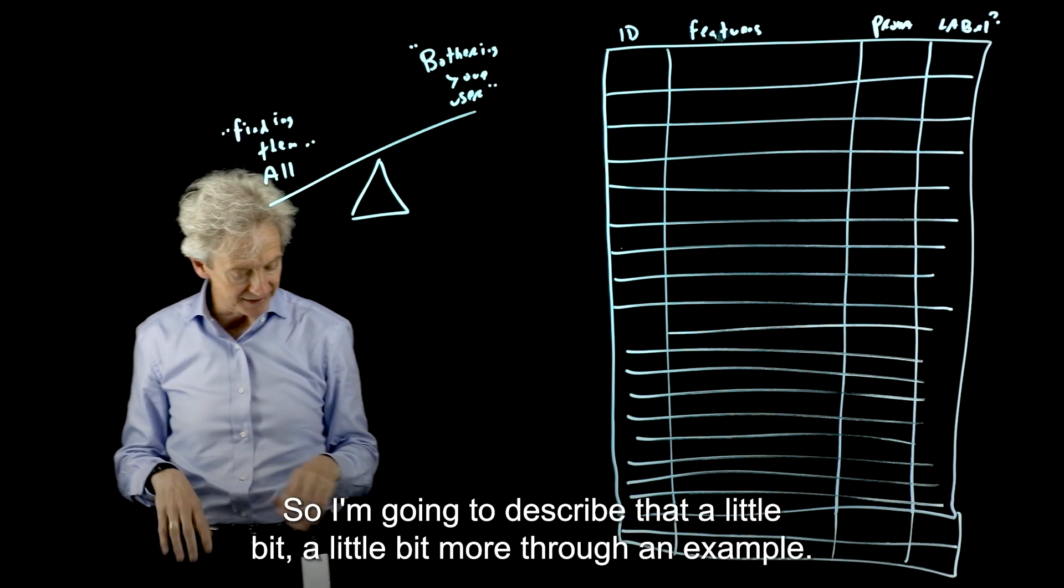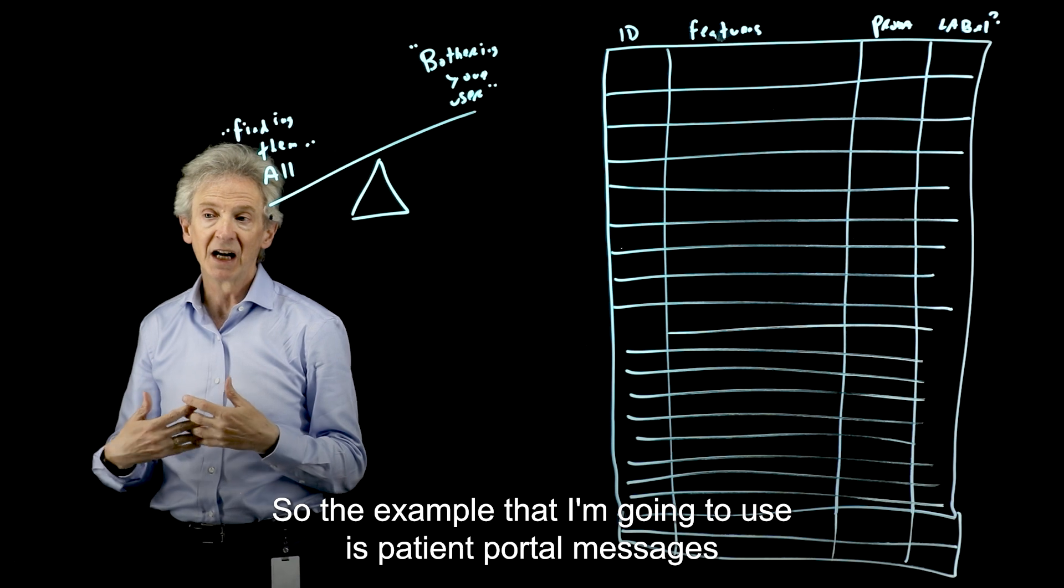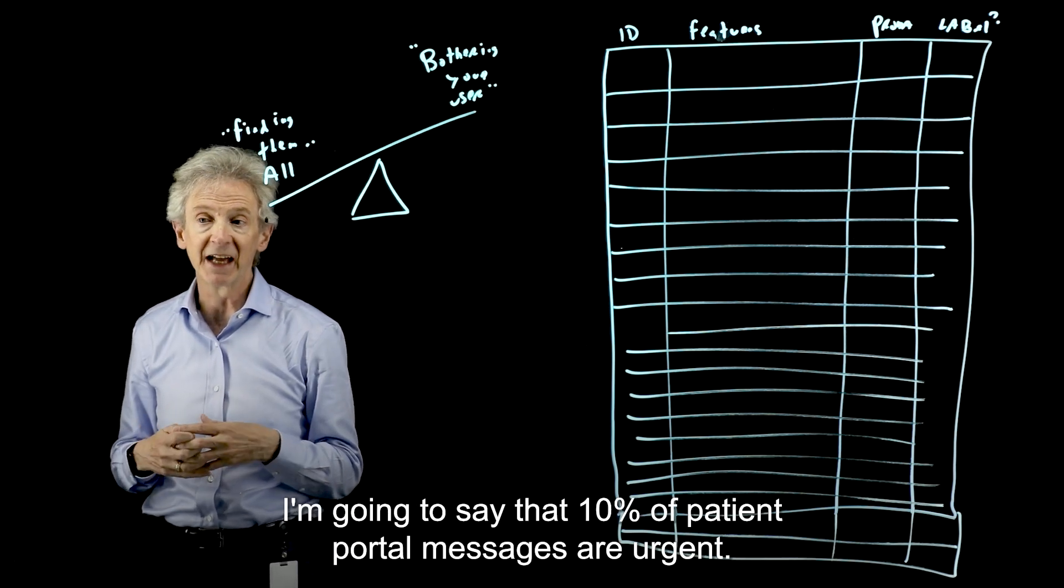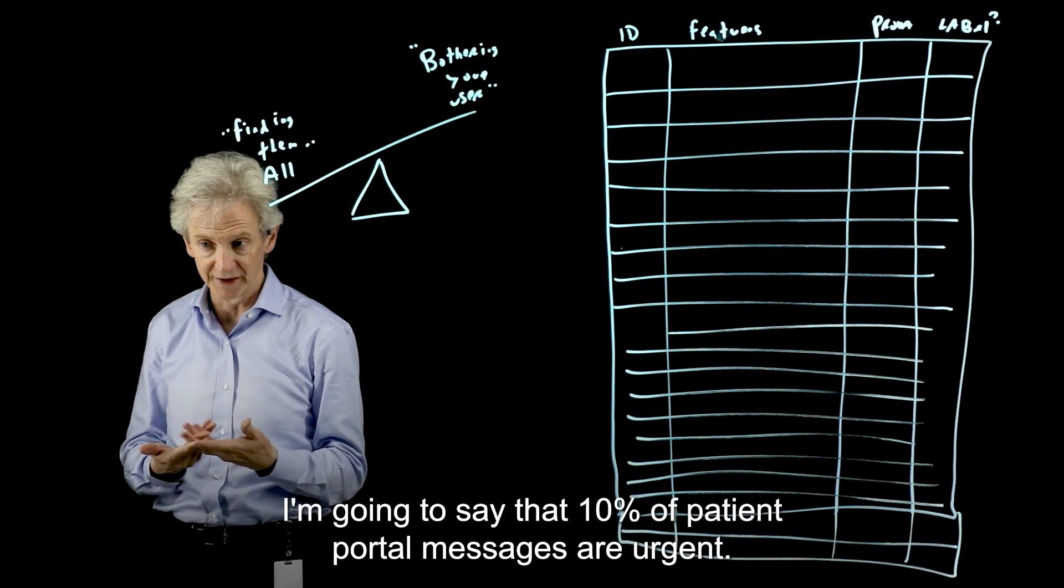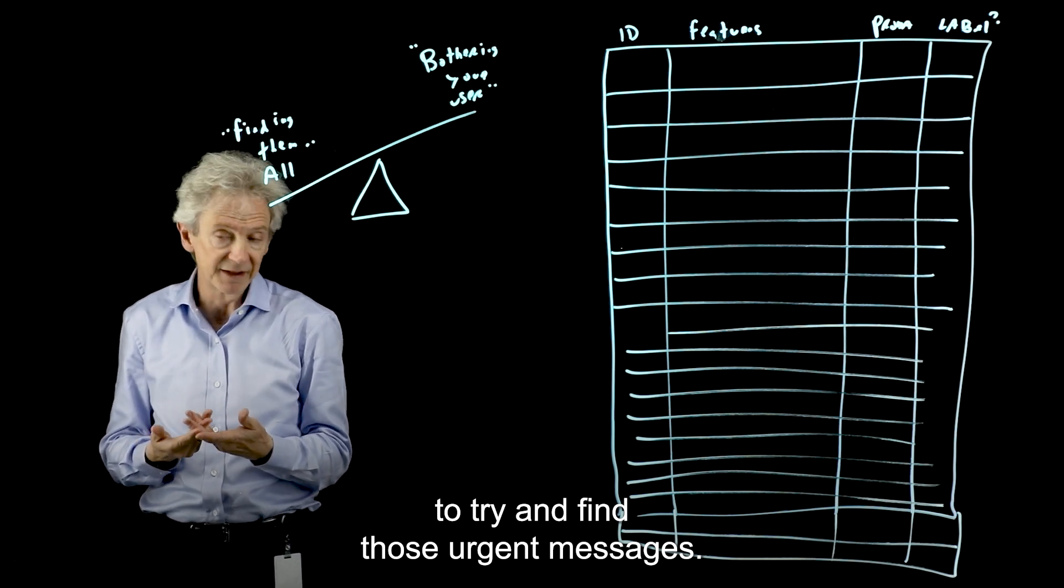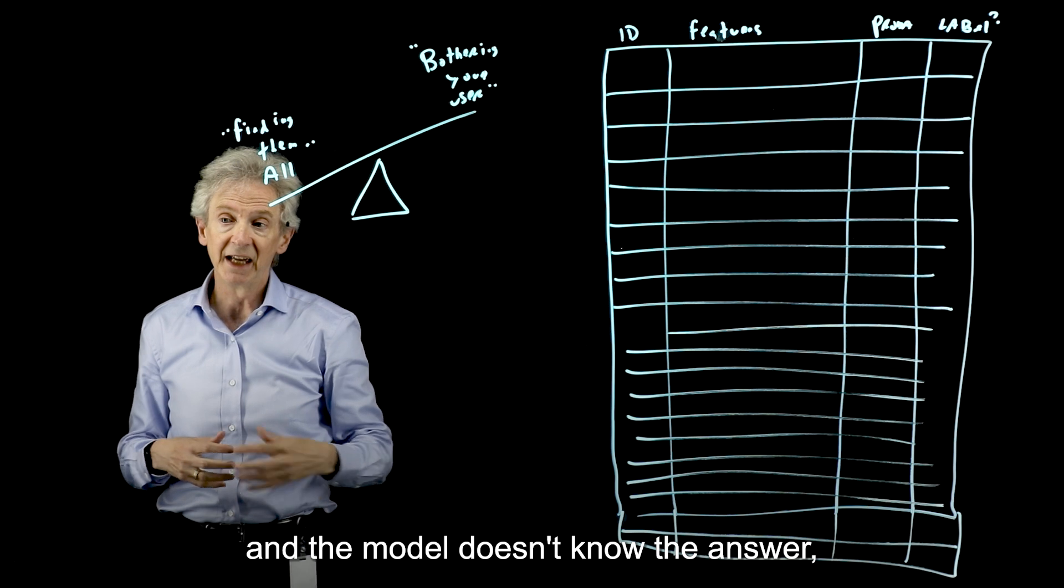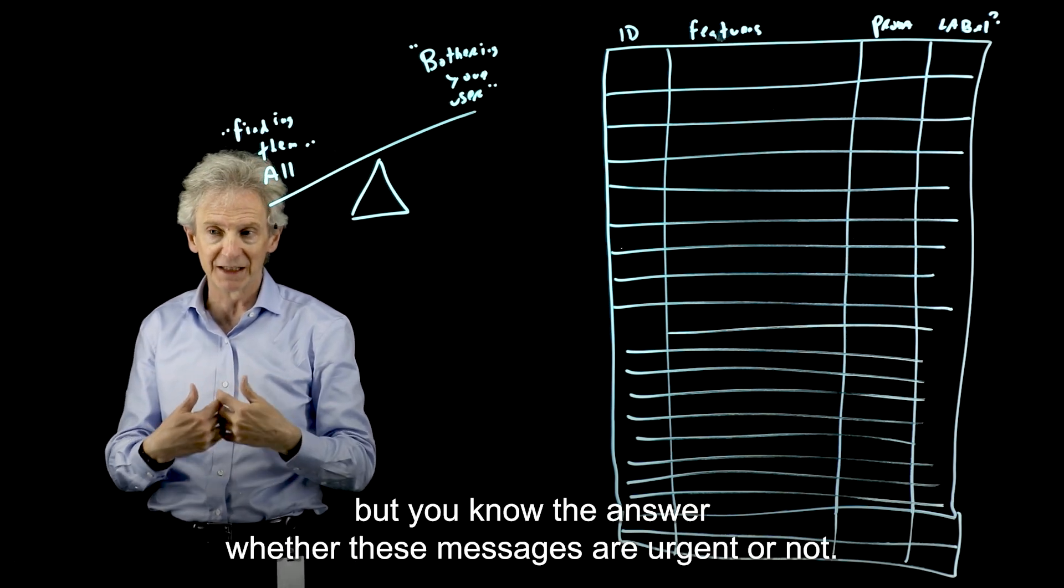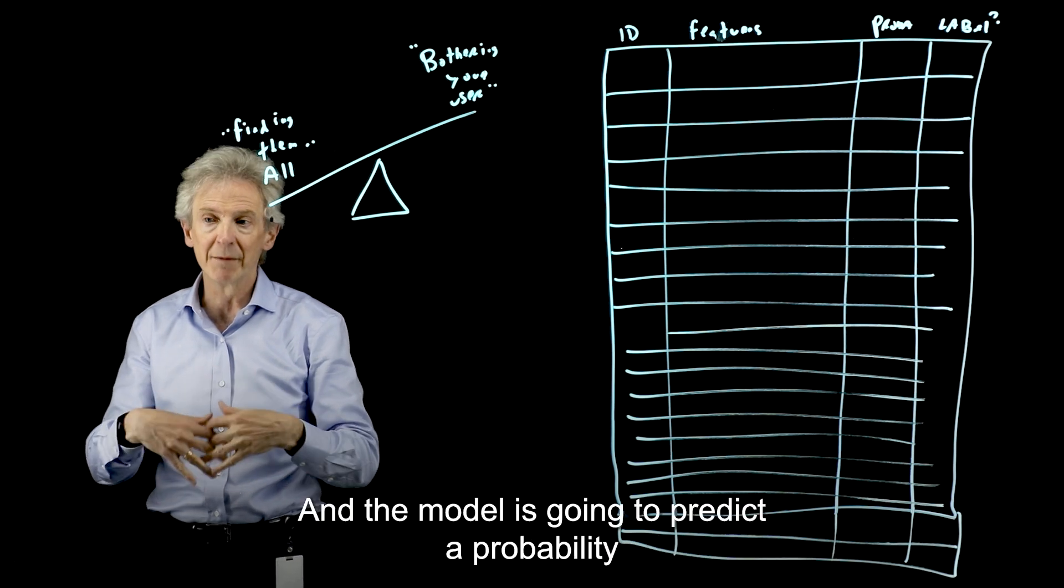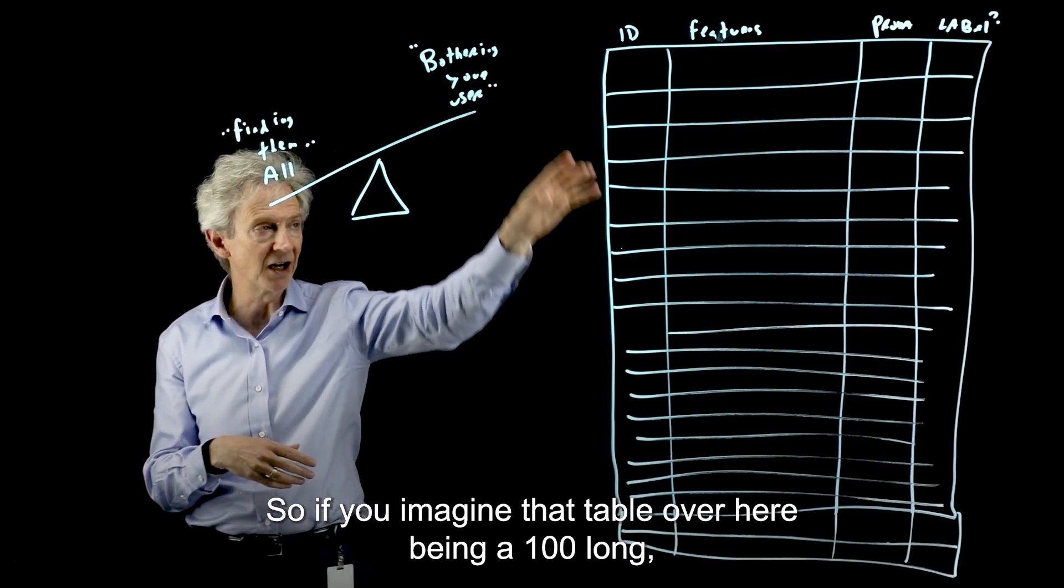So I'm going to describe that a little bit more through an example. So the example that I'm going to use is patient portal messages, where we're identifying whether those messages are urgent or not. And I'm going to make the math simple. I'm going to say that 10% of patient portal messages are urgent. So we're going to build a model to try and find those urgent messages. Now, imagine your data set of 100 messages, and the model doesn't know the answer, but you know the answer whether these messages are urgent or not. So 10 of these 100 are urgent, and you're going to give these 100 to the model, and the model is going to predict a probability of being urgent on every message.